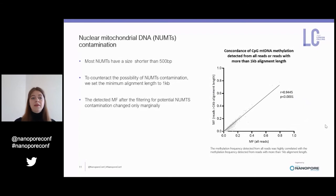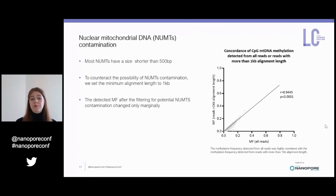We then explored the possibility of nuclear mtDNA contamination. The so-called NuMTs are transpositions of mtDNA into the nuclear genome, and generally these segments have a size shorter than 500 base pairs. Therefore, we filtered our reads for alignment lengths of at least one kilobase to the major mitochondrial reference genome. As shown in the figure, after the filtering, the detected methylation frequency changed only marginally, and we concluded that NuMT contamination was probably not influencing our results.